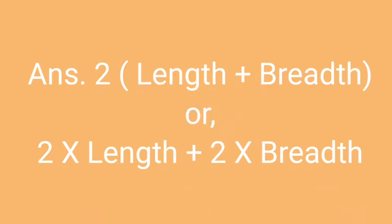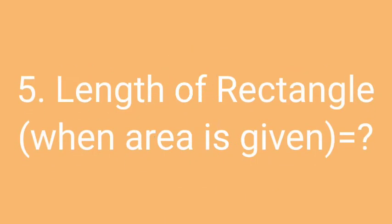The correct answer of this question will be 2 multiply (length plus breadth), or equivalently 2 multiply length plus 2 multiply breadth. Perimeter of rectangle equals 2(length + breadth).